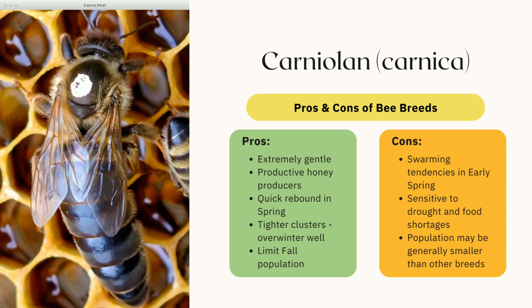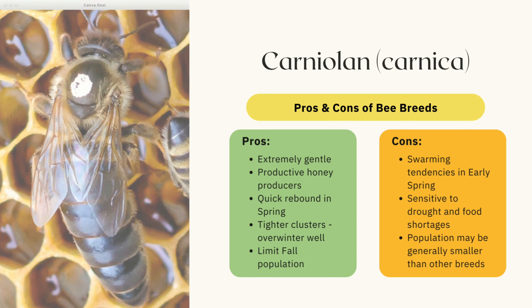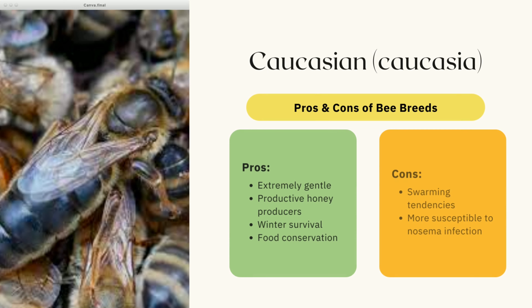The Carniolan bee is native to another isolated region high in the Austrian Alps and Danube Valley. They can be found across large areas of Eastern Europe, like Hungary, Croatia, and Serbia. Because of their colder origins, they tend to form tighter clusters, making them very good overwintering bees, and they quickly rebound in the spring for the same reason.